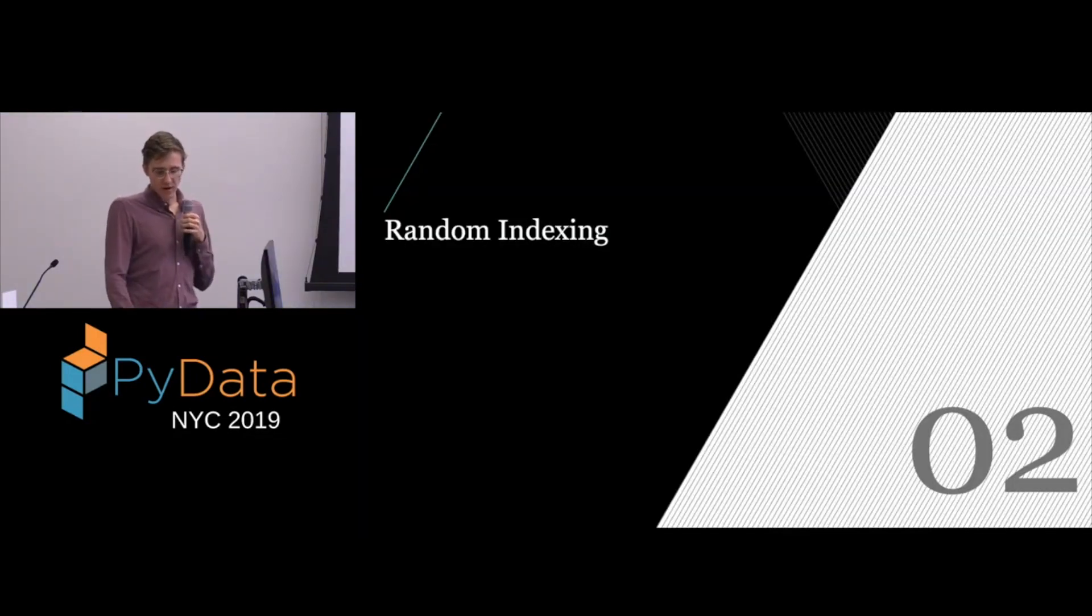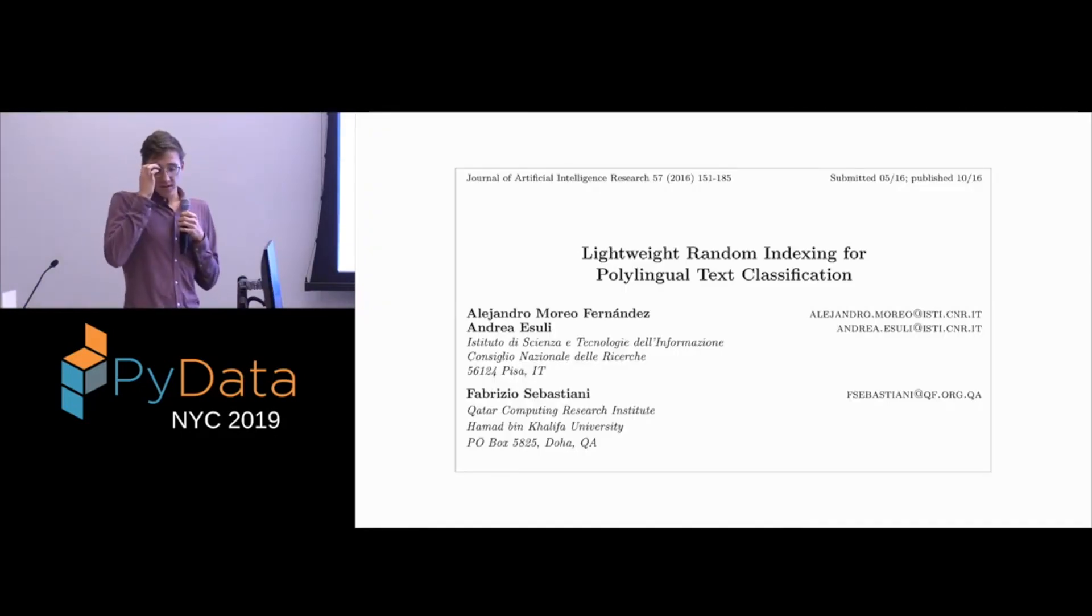So first, we'll talk about random indexing. To plug the paper really quick that I'm sort of presenting, here it is. You can go look it up. It's published in the Journal of Artificial Intelligence Research in 2016. Most of the notation that I'll use is theirs. Most of the explanations I'll use are also theirs. Before we go and look at random indexing, we'll look at a very similar method called random projections, which you may have heard of, which kind of just builds some theoretical support around why it sort of makes sense to do this.